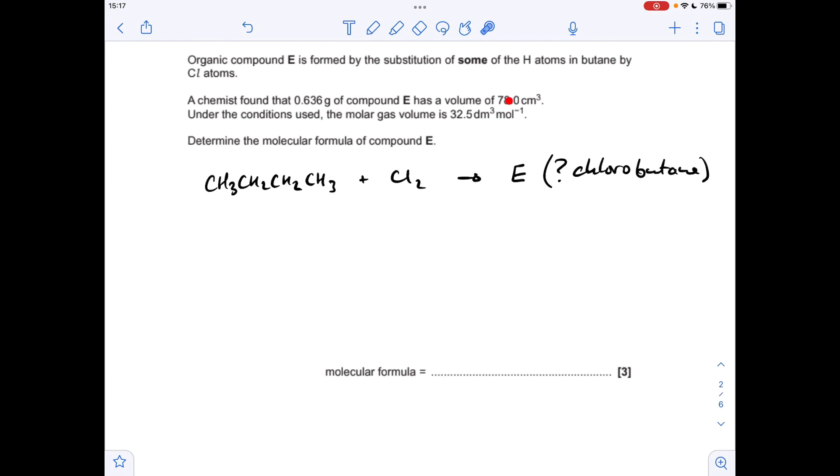The first thing that you do is make the units consistent, so I'm going to put the volume into decimeters cubed so it matches with the dm cubed in this molar gas volume. Now we've done that we can work out how many moles of E that is. Moles equals the volume we've got divided by this molar gas volume, so it's coming out at 2.4 times 10 to the minus 3 moles of E.